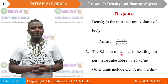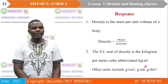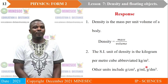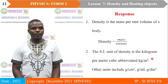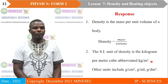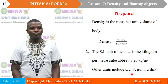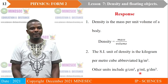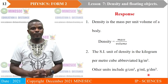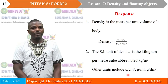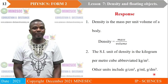The SI unit of density is the kilogram per cubic meter, abbreviated as kg/m³. Other units of density include grams per cm³, grams per milliliter, and grams per cubic decimeter.